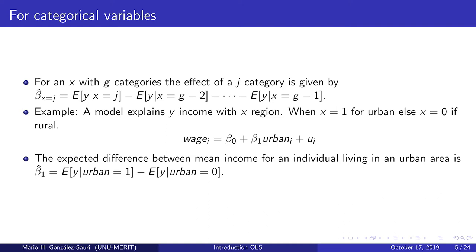For any categorical variable that has two or more categories, including binary variables, the effect of a given category is given by the difference in expectations between that category and all the other categories. For example, suppose we have a model explaining income with region. Region is a binary variable taking the value of one when a person lives in an urban area, or zero if living in a rural area. Then we can interpret beta_1 as the difference in mean income for an individual living in an urban area.